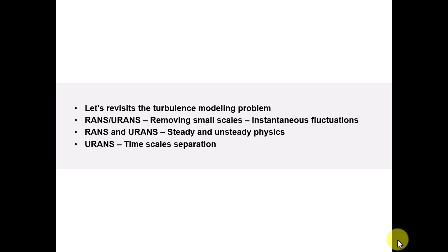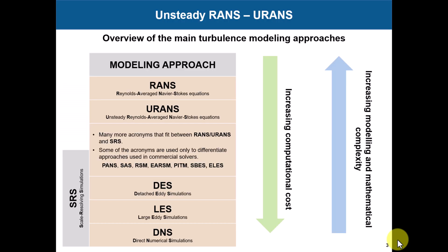Some general knowledge: after this, here is where we are. We started with RANS, now we're moving to URANS. As you can see, we're building our way toward scale-resolving simulations. That will be our next CFD cookie, or probably a transition — I need to see how to organize my time. So this is where we are in our scale of turbulence models.